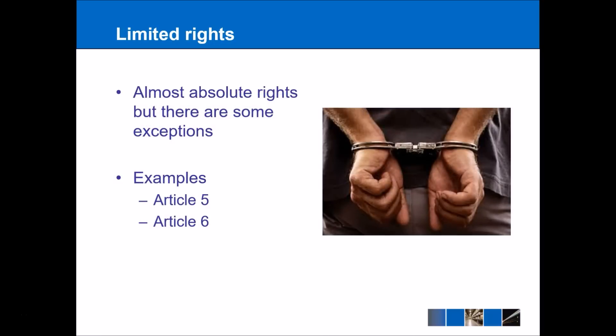Limited rights are almost absolute rights, but there are some key exceptions. The best example is Article 5, which is your right to liberty — you have freedom of movement and shouldn't be impinged by the state. But the exception would be that if you're arrested lawfully, that is a legitimate breach of your right to liberty. Similarly, prisoners serving a custodial sentence can have their right to liberty limited. Article 6 is the right to a fair trial, which you might think is absolute, but where there are particular issues of national security it might be necessary to hold a trial in secret — that's the sort of limitation we're talking about.